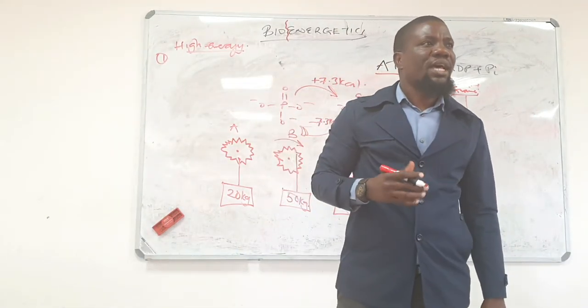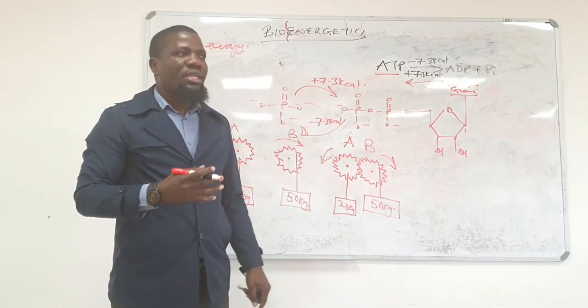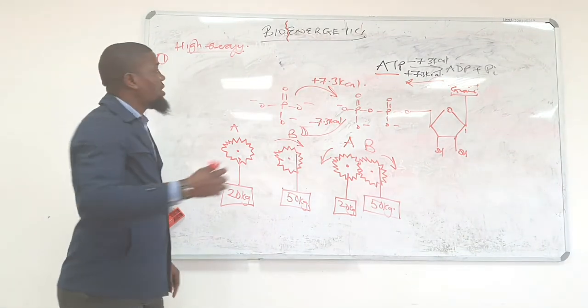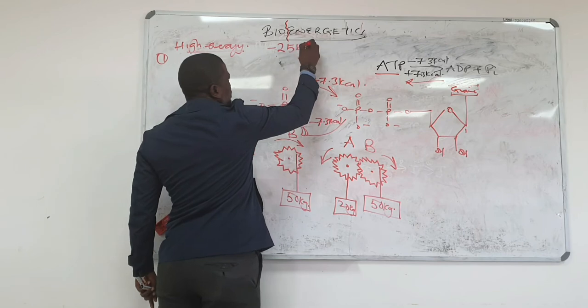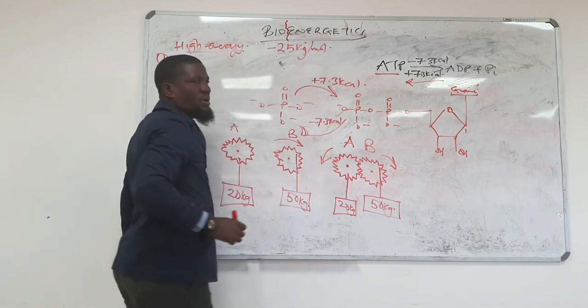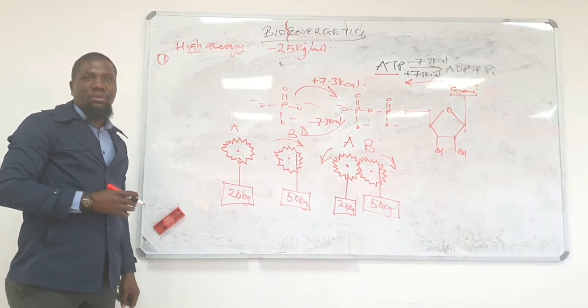A high energy molecule is defined as any molecule which after hydrolysis would give off at least minus 25 kilojoules per mole. If it gives off that much energy, it's considered a high energy molecule.